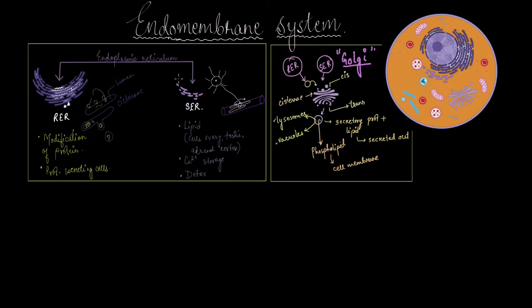In our previous video we discussed the endoplasmic reticulum and the Golgi body, which are two organelles of the endomembrane system. In this video we are going to talk about the remaining two: the lysosome and the vacuoles.